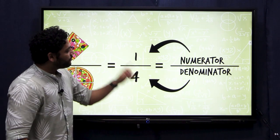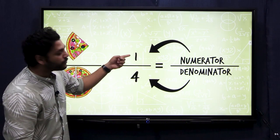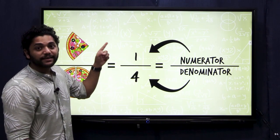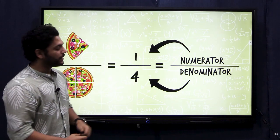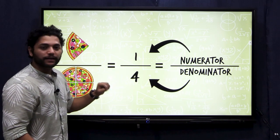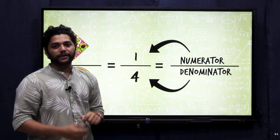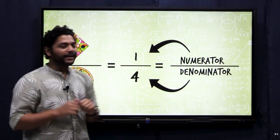In fractions, we represent the number above the line as a numerator and the number below the line is called the denominator.